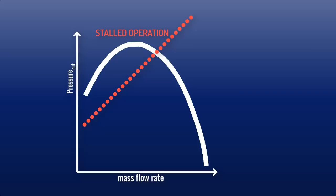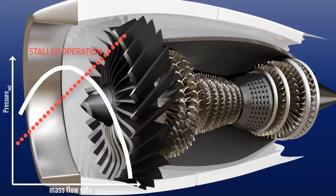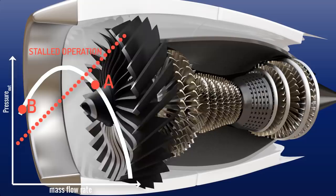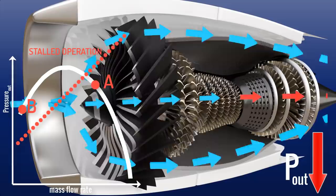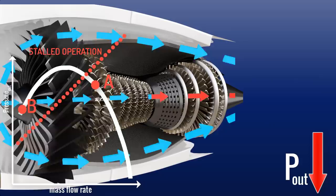Assume the initial compressor operating point is A and due to the compressor stall the point moves to B. Here the pressure at the compressor outlet drops drastically and there is a huge drop in airflow. The air available is insufficient and therefore only a portion of the fuel gets burnt. The very hot unburnt fuel which escapes through the back of the combustion chamber will meet the oxygen-rich bypassed air and there will be sudden combustion.